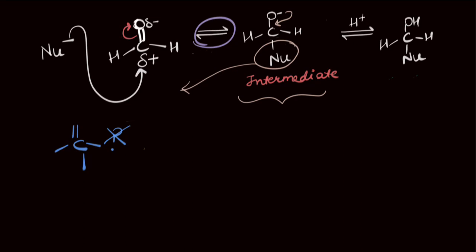So, let's just quickly summarize what really happened during the entire process. The nucleophile attacked the carbonyl carbon. The pi electron density moved to the more electronegative oxygen atom. There was a protonation that happened and we finally got the final product.